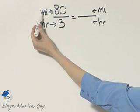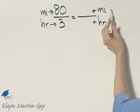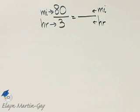Since in the numerator is miles and in the denominator is hours, I'll write this side so I have miles in the numerator and hours in the denominator also.